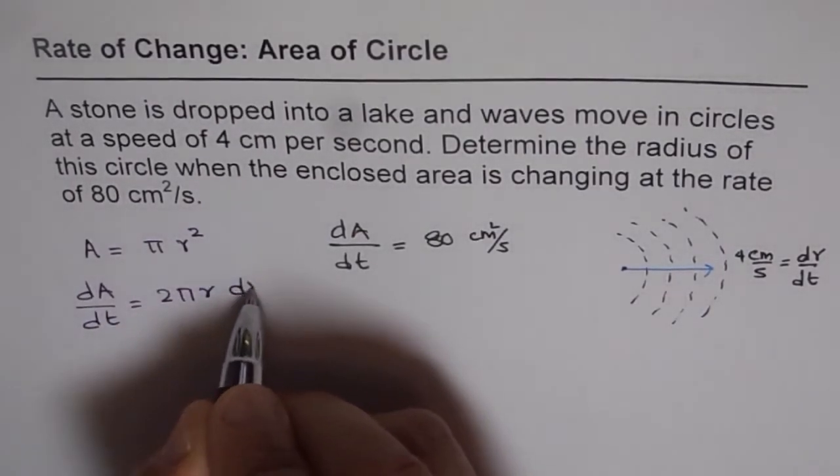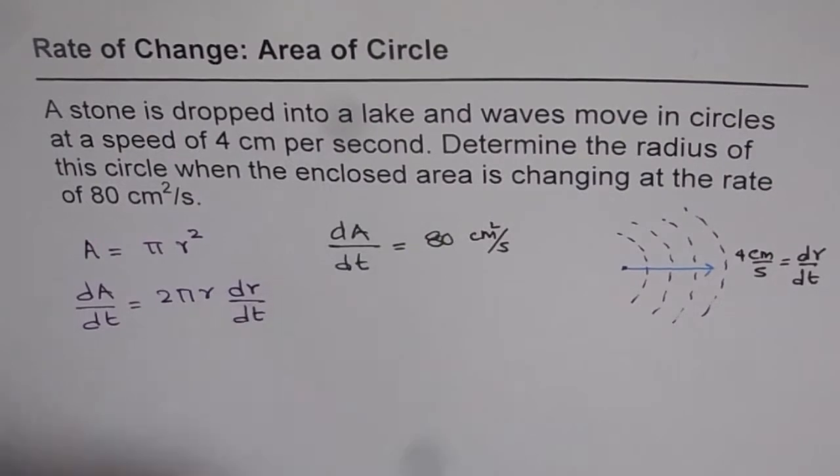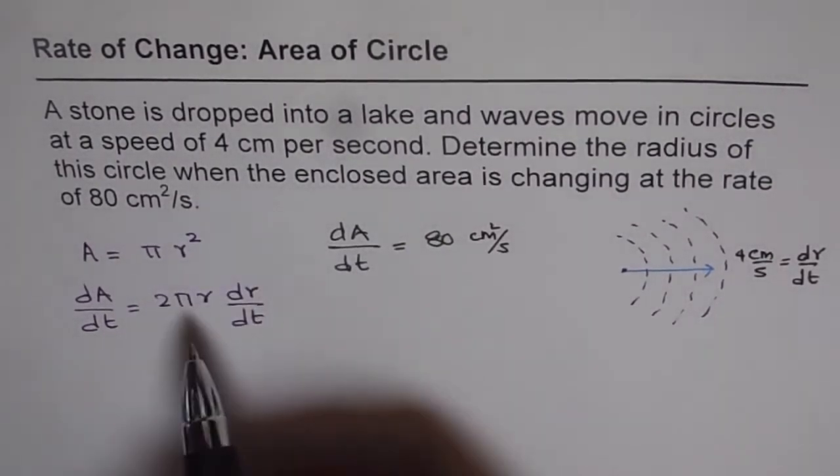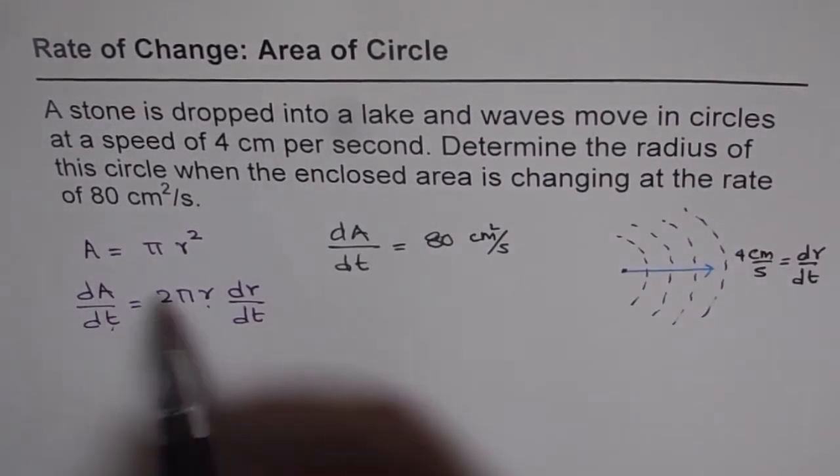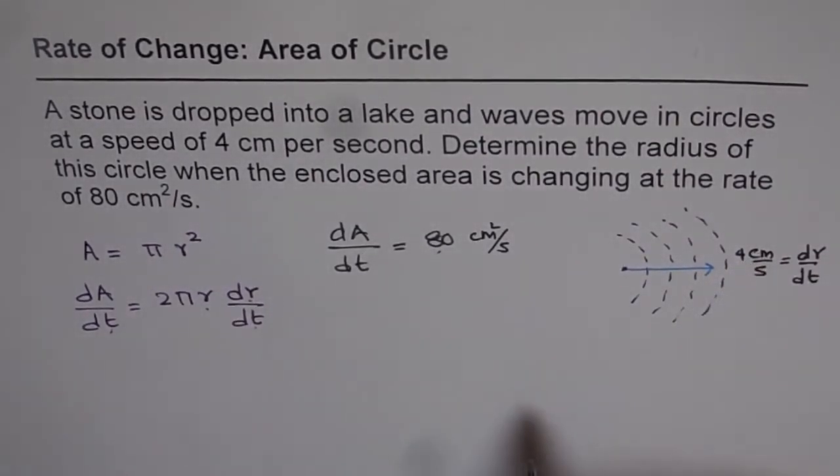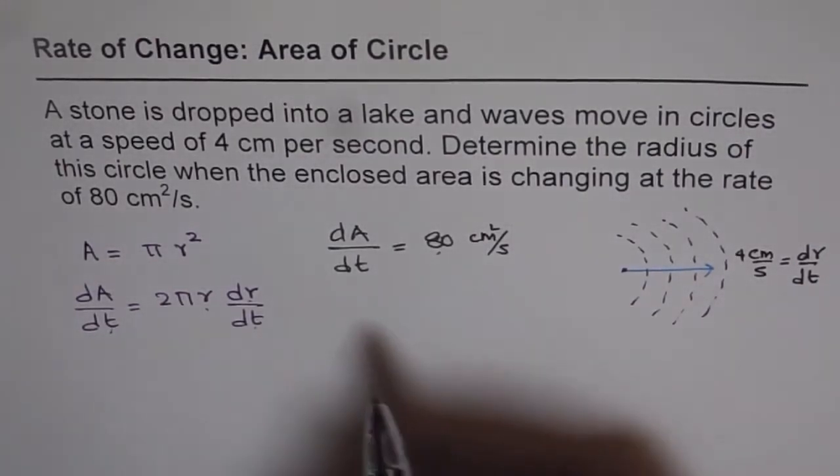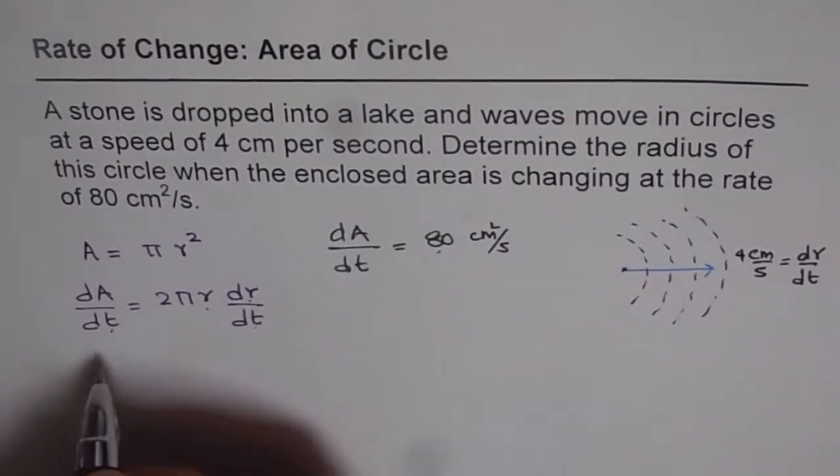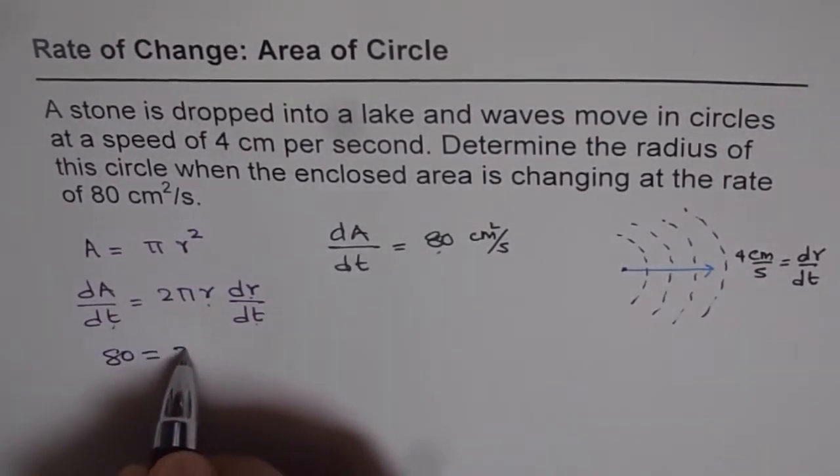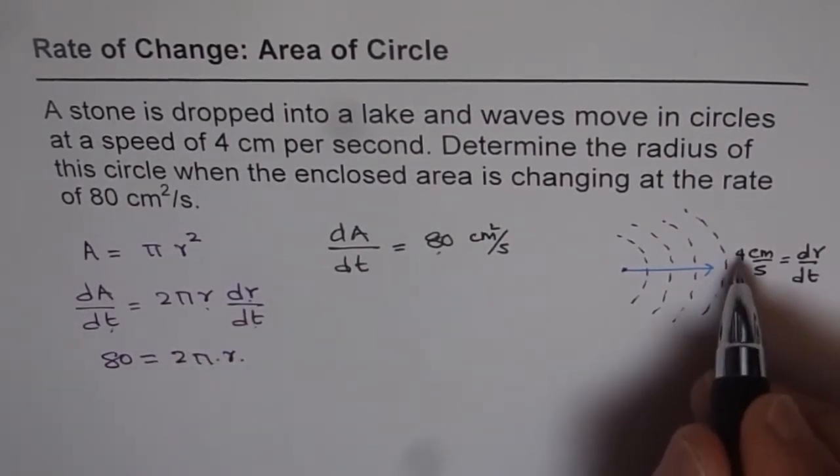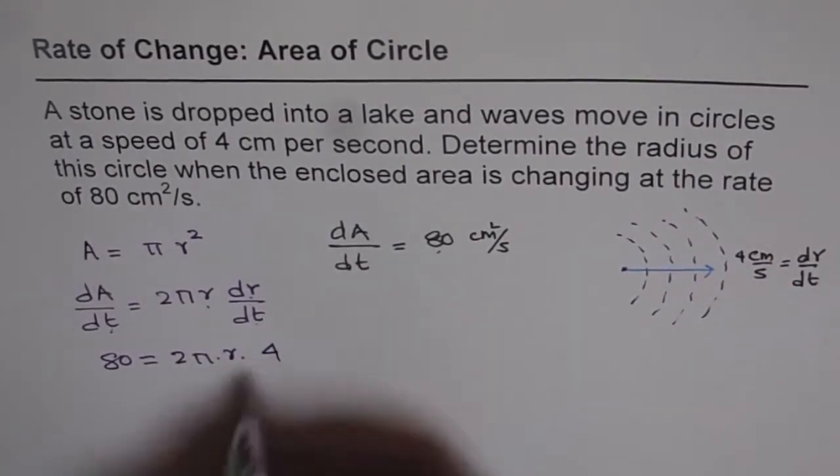In this situation we want to know what is r when dA/dt is 80 and dr/dt is 4 centimeters per second. Substitute these values and calculate. We'll substitute here: dA/dt is 80, 2 pi, and r we need to find, and dr/dt is 4 centimeters per second.